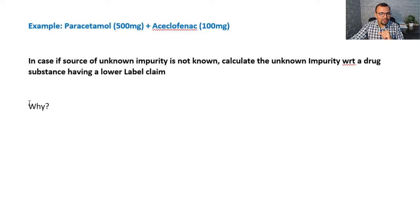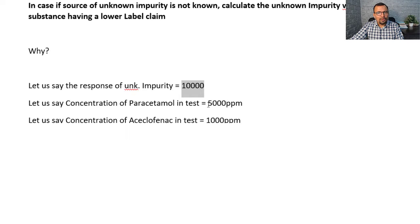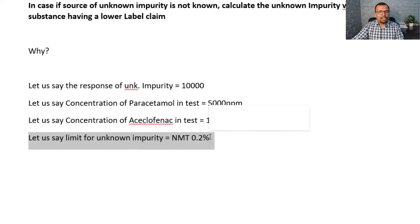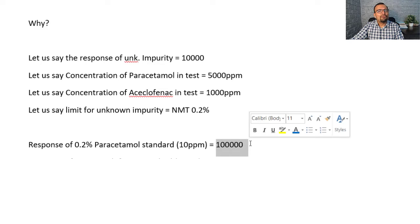Let us understand why you need to quantify the unknown impurity against the drug substance with the lower label claim. Assume the unknown impurity has a peak area of 10,000. The concentration of paracetamol in the test solution is 5,000 ppm, and aciclophenac is 1,000 ppm. The limit for an unknown impurity is not more than 0.2%. The paracetamol standard at 0.2% concentration is 10 ppm, and its response is around 1,000,000 area units.